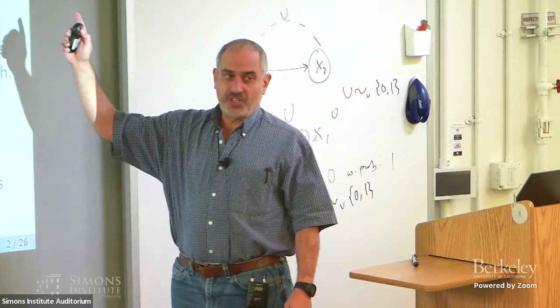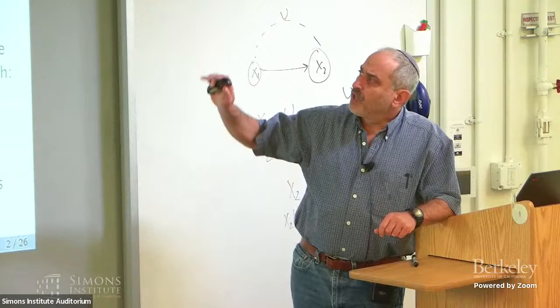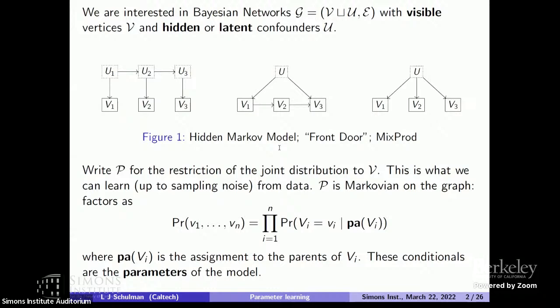We have Bayesian networks — their visible variables are always called v and they could be all kinds of configurations. For this talk, we're going to have in mind the situation where there's just a single hidden variable u. The structure of the network in general could be all kinds of things, as seen in Arnab's talks, and Yuval will develop that more extensively in the lecture to come. I'm going to say virtually nothing about causality or the causal network structure in this talk, because that will come up in the subsequent talk.